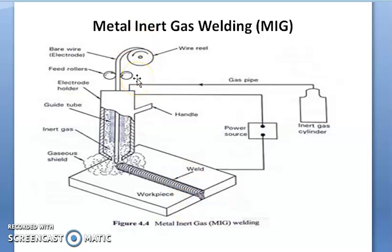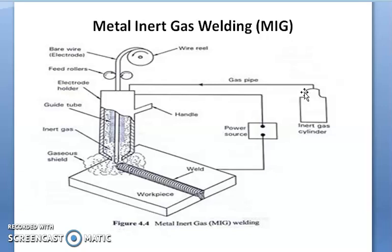The electrode material used in MIG welding is of the same material, or nearly the same chemical composition, as that of the base metal. MIG makes use of shielding gas to prevent atmospheric contamination of the molten weld pool, and for that we use the inert gases.